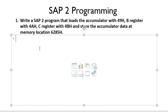So our today's question is: write a SIP2 program that loads the accumulator with 49H, B register with 4H, C register with 4B yards, and store the accumulated data at memory location 6285H.